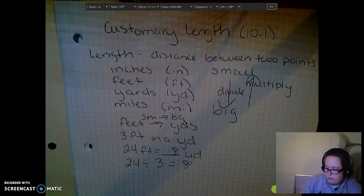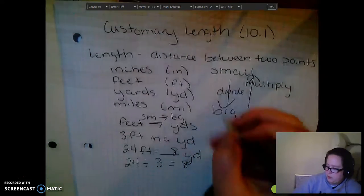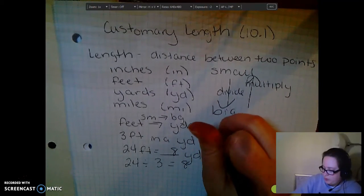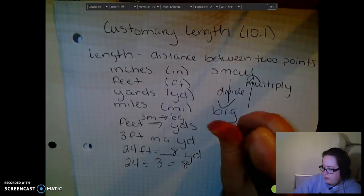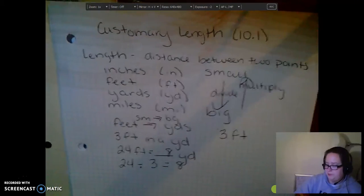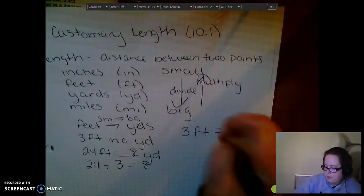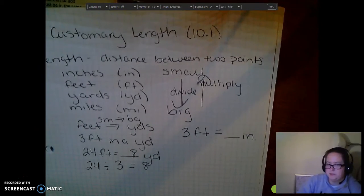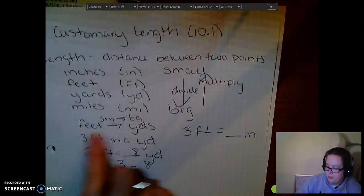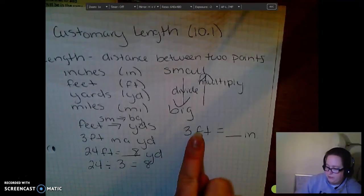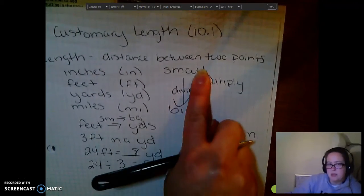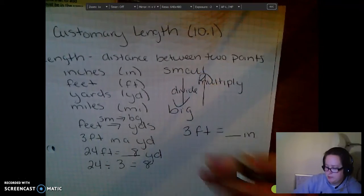What if we are going, let's say, we have three feet. We want to know how many inches that is. Well, now, we're going from feet to inches. So, we're going from feet to inches, which means we're going from big to small, which means we're going to multiply.